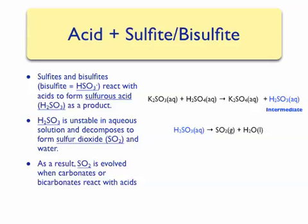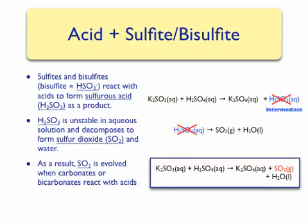Once again, we can combine our decomposition and double displacement reactions, which results in the canceling out of the sulfurous acid molecule. Therefore, the net reaction between potassium sulfite and sulfuric acid will yield potassium sulfate, sulfur dioxide gas, and liquid water.